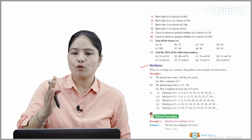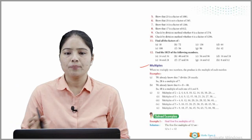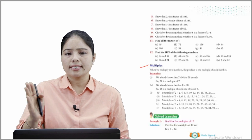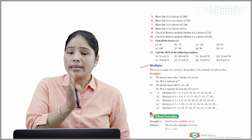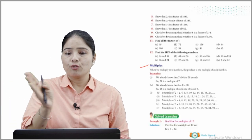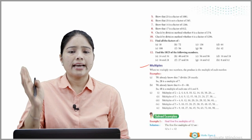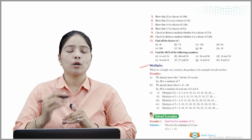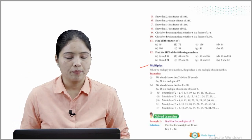Multiples of 2 are 2, 4, 6, 8, 10 — the table of 2. Multiples of 3 are 3, 6, 9, 12 — the table of 3. Multiples of 4 are the table of 4, multiples of 5 are the table of 5, and multiples of 9 are the table of 9. These are what we call multiples.